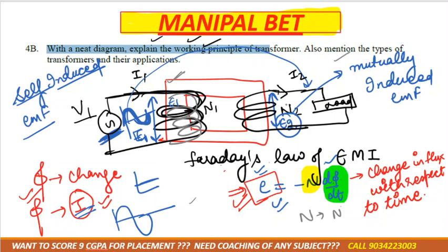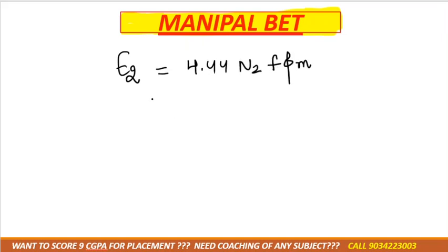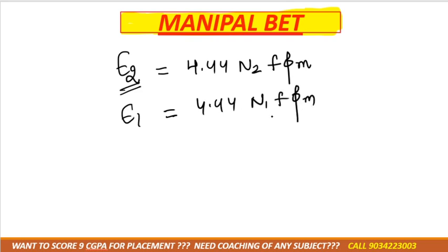This is the basic working principle of the transformer. The formula for the EMF induced is: E2 = 4.44 × N2 × f × Φm for mutually induced EMF, and E1 = 4.44 × N1 × f × Φm for self-induced EMF.